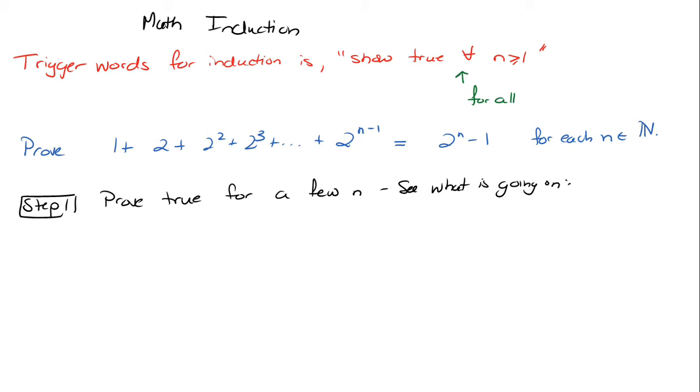I've got to see a few to kind of get that feel. The second reason is I'm also hunting for a pattern that will make the next step easier for me. So I put in n equals one. If I put in n equals one into this side, I get 2^0 which is 1.